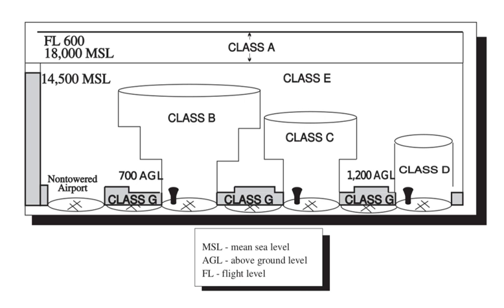Uncontrolled airspace, or Class G airspace, is the portion of the airspace that has not been designated as Class A, B, C, D, or E — it is therefore designated uncontrolled airspace. Class G airspace extends from the surface to the base of the overlying Class E airspace. Although ATC has no authority or responsibility to control air traffic, pilots should remember there are visual flight rules minimums which apply to Class G airspace.